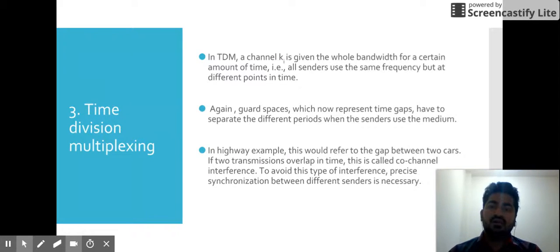Let's see our next technique, which is time division multiplexing. In time division multiplexing, the whole bandwidth for a certain time is given to a sender. All the senders use the whole frequency but at different points in time. At one time, only one user can use that frequency, that bandwidth. Again, in order to have minimum interference, we use guard spaces which now represent time gaps that separate the different periods when the sender uses the medium.